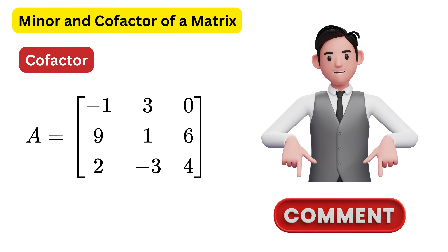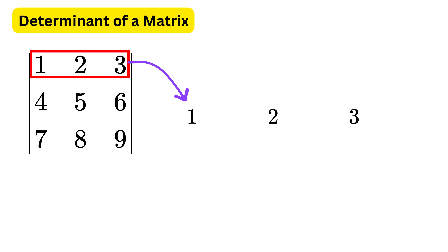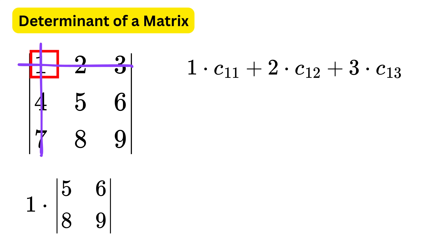Let me know in the comments what will be the minor and cofactor of the last element. Now we can find the determinant of a 3x3 matrix. To find the determinant, we can choose any row we want — usually the first row — and for each element in that row, we multiply it with its cofactor, then add those results. We will expand along the first row. Take the first element, which is 1, then remove the first row and first column, and find the determinant of the smaller matrix formed.